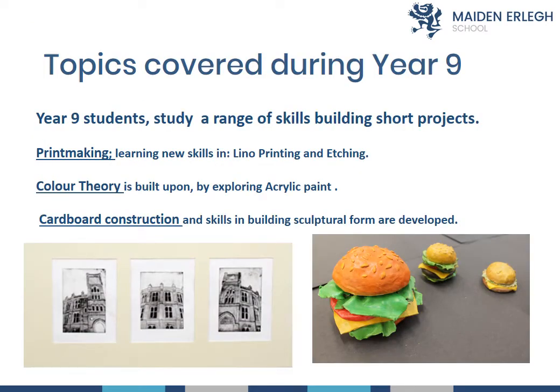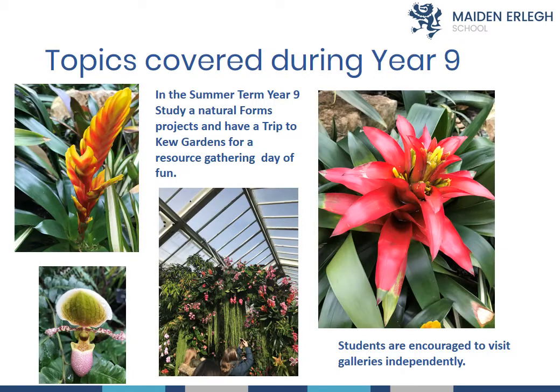Topics covered during Year 9: students study a range of skills-building short projects including printmaking, colour theory, and cardboard construction. In the summer term of Year 9 there is a trip to Kew Gardens for a resource-gathering day, where students take lots of photographs of the greenhouses, foliage, plants, and flowers to bring back into the classroom to draw from — forming part of a natural forms project.